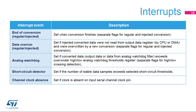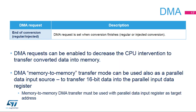A set of interrupts related to DFSDM events has been implemented to increase CPU performance. Interrupt sources include end-of-conversion events with separate flags for regular and injected conversions, data overrun events with separate flags for regular and injected conversions, analog watchdog events, short circuit detector events, and channel clock absence events. To decrease CPU intervention, conversions can be transferred into memory using DMA, with DMA transfers for injected and regular conversions enabled separately.